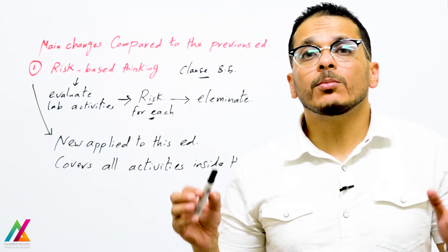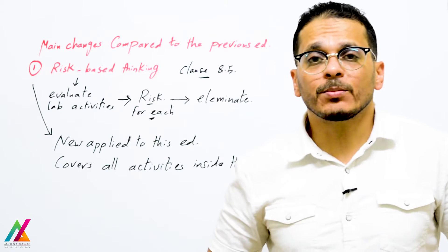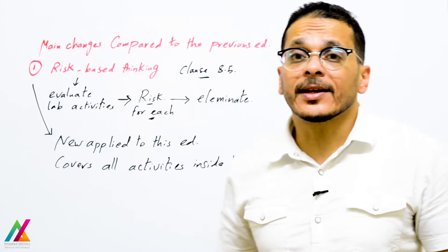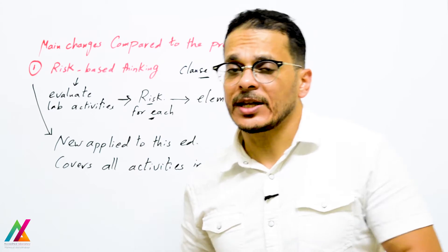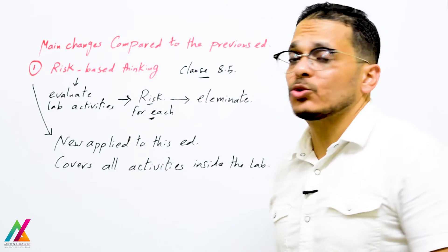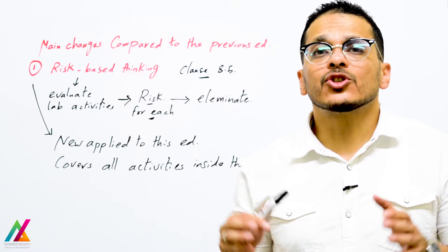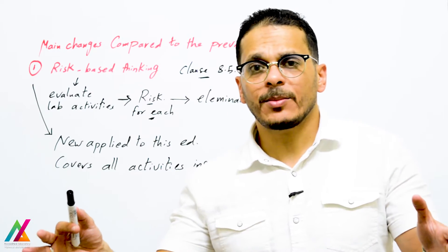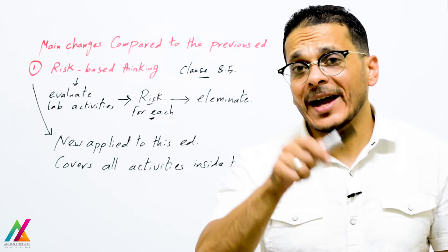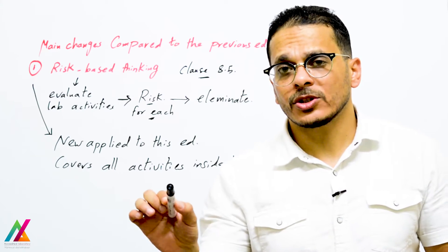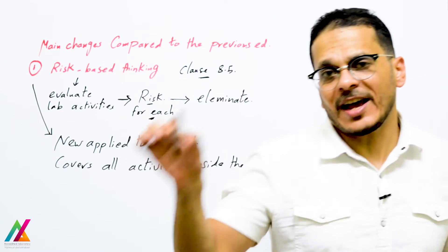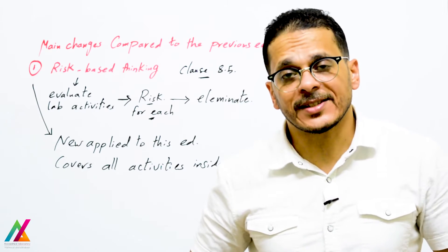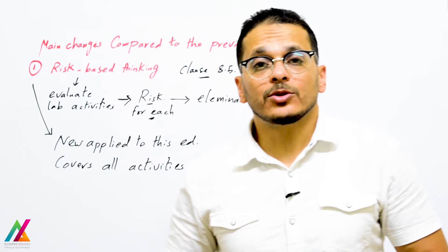The most important change compared to the previous edition is risk-based thinking, or the risk-based approach. This is explained in detail in clause 8.5, 'Actions to Address Risks and Opportunities.' This is a new addition to this edition and covers all activities inside the lab. You shall evaluate all activities inside the lab and for each activity try to identify what risk may affect it, then eliminate or reduce that risk.